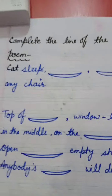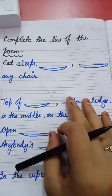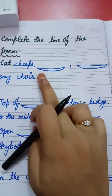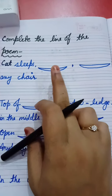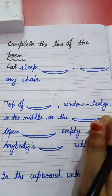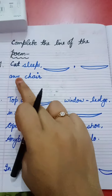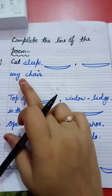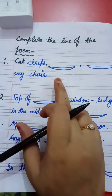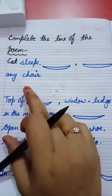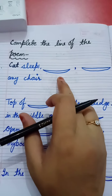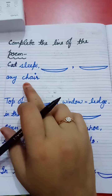Our next exercise is to complete the lines of the poem, from page number 30. I have made sentences and instead of a fill-in-the-blank dash, you have to draw a crescent moon. So: 'Cat sleeps ___, any table, any chair' — you will write 'anywhere.'